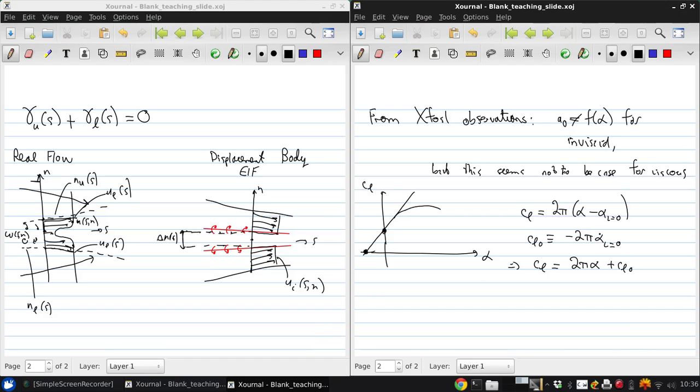Through α_L=0, we know that C_l0 depends purely on the airfoil camber shape within the scope of thin airfoil theory. We had α_L=0 = -1/π ∫(0 to π) dz/dx · cos(θ₀ - 1) dθ₀.